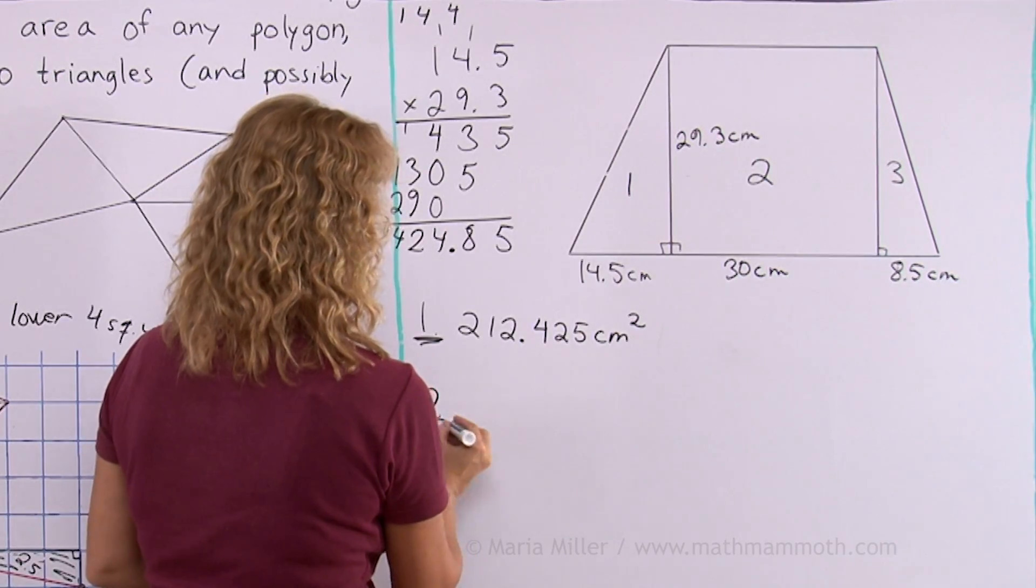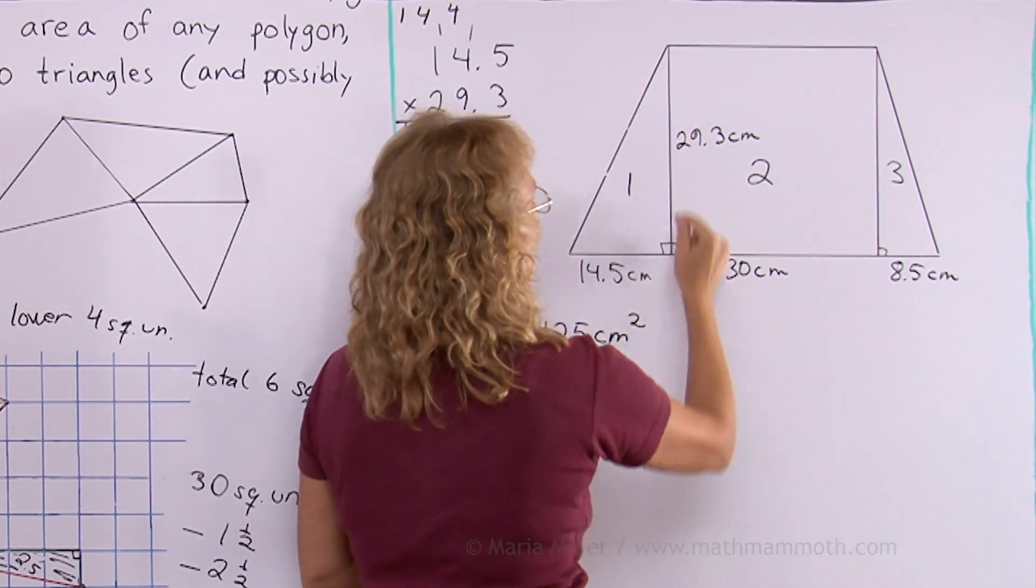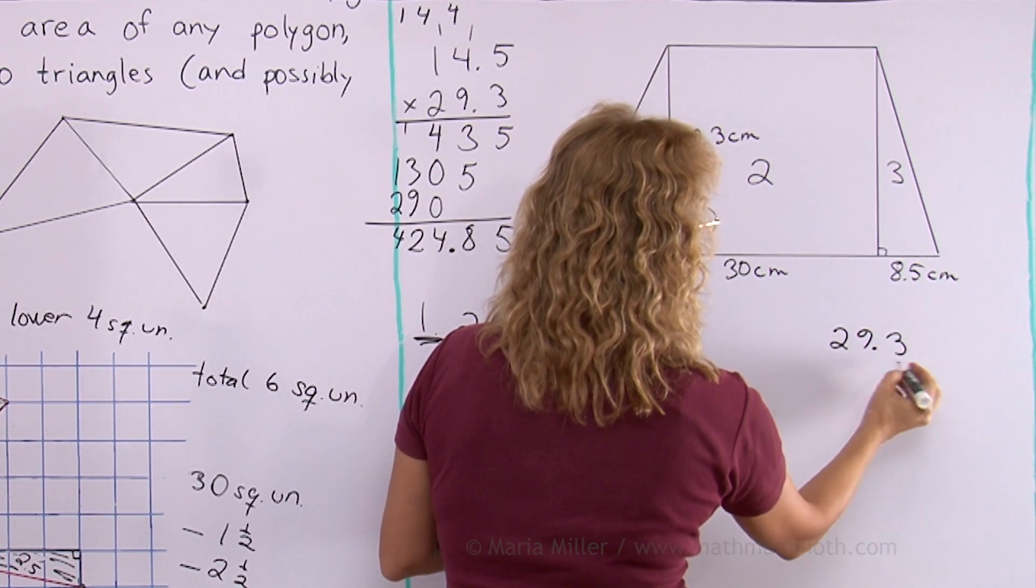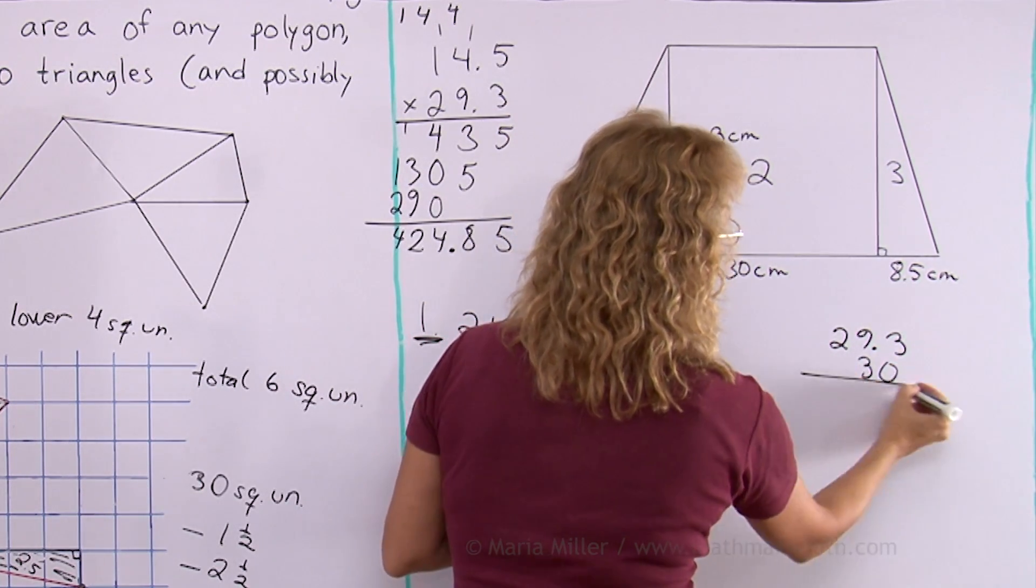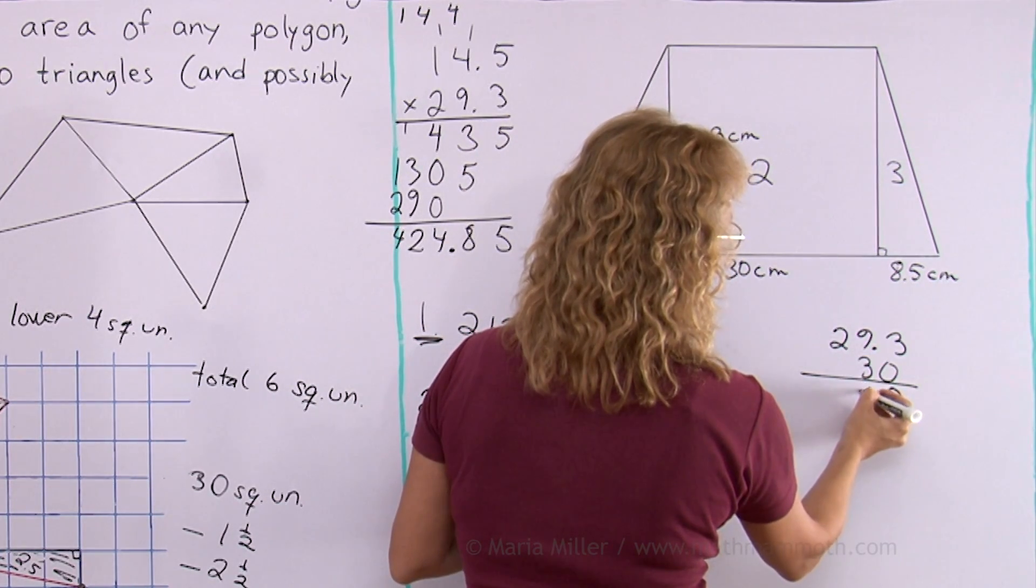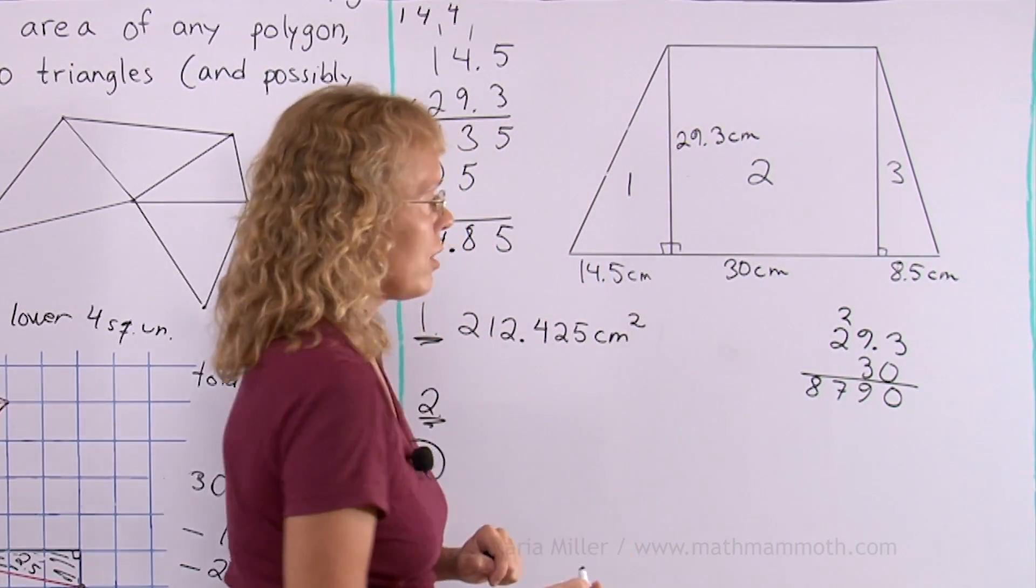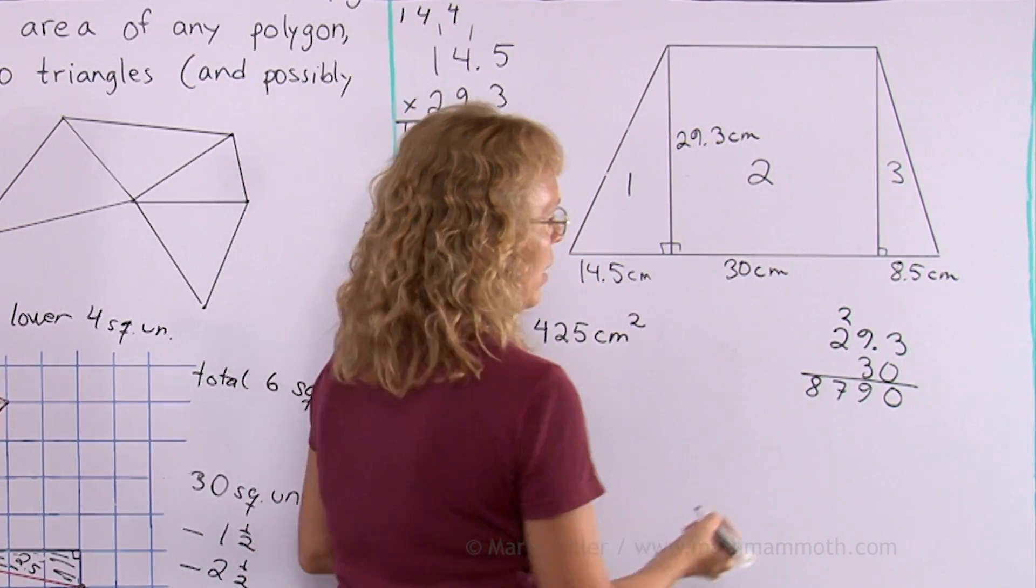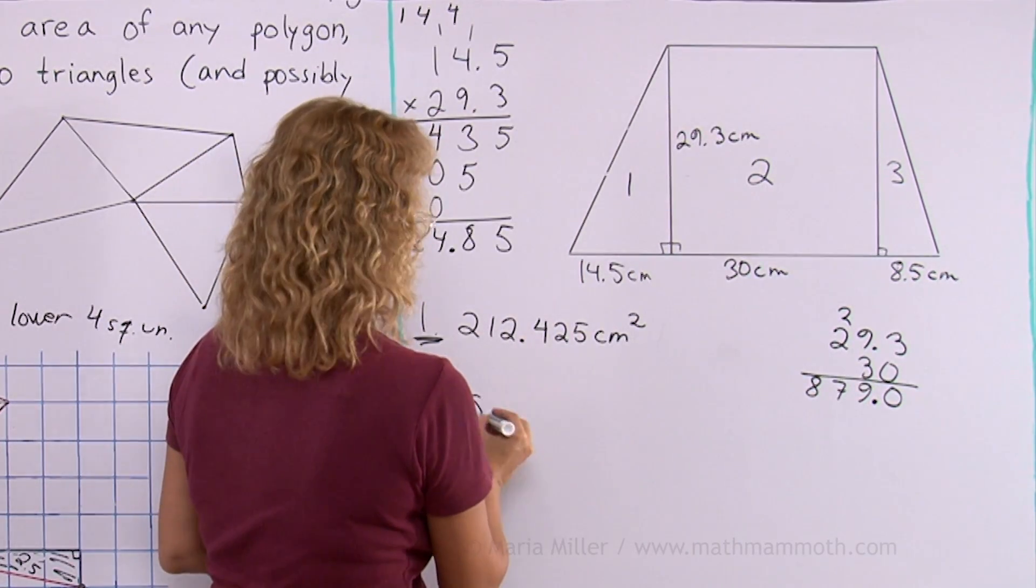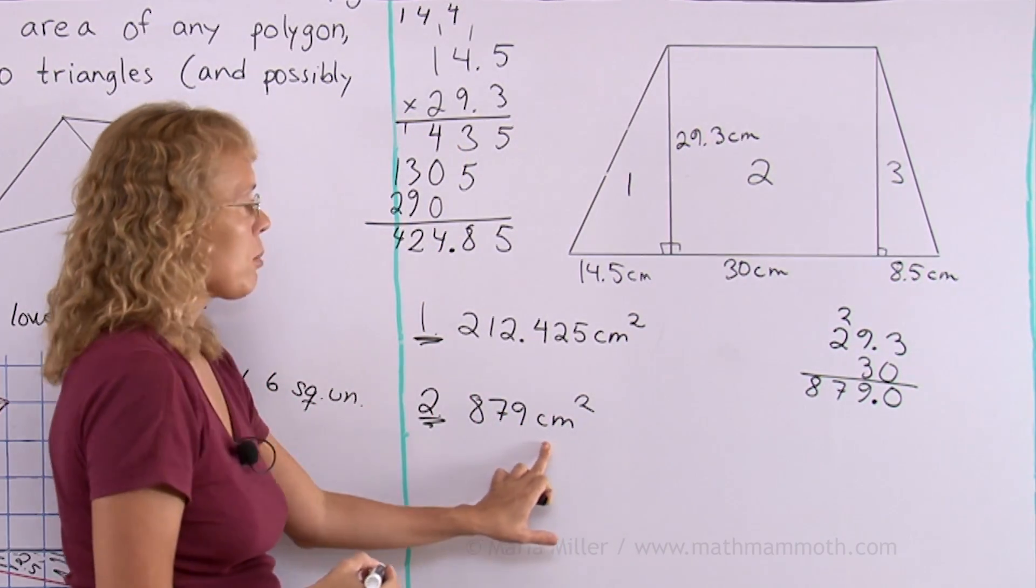Next we'll take the rectangle. That's easy because you just multiply this side times this side. So we have 29.3 times 30. Three times three is nine. Then I need to put a decimal point in my answer. There's one decimal digit here, so one there too. The answer is therefore 879 square centimeters.